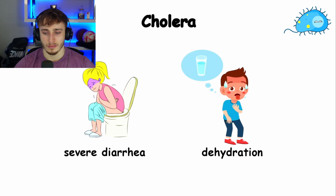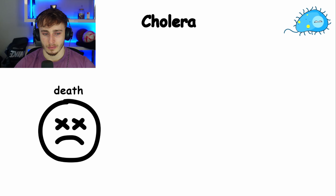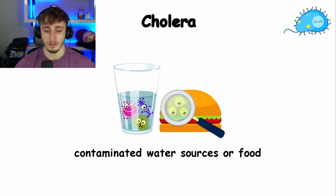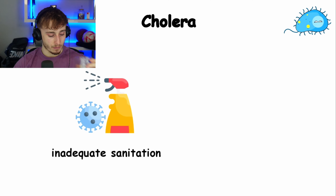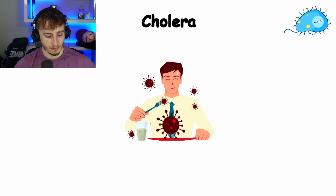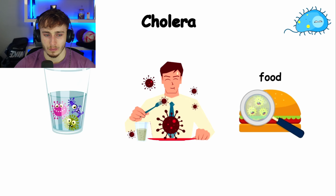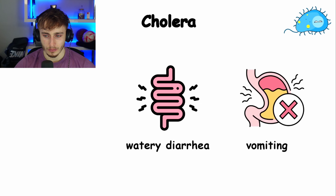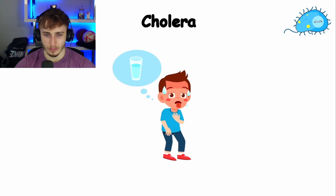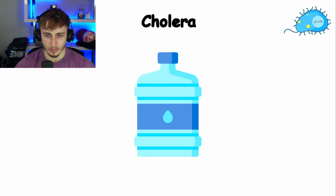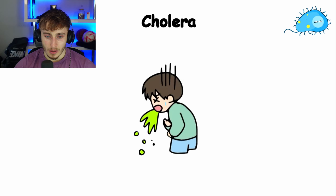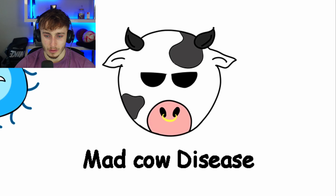Cholera. Cholera is a bacterial infection known for its rapid onset of severe diarrhea and dehydration, often leading to a life-threatening condition or death in less than 24 hours if not treated promptly. The bacteria are typically found in contaminated water sources or food, particularly in areas with inadequate sanitation and poor hygiene practices. When someone ingests contaminated water or food, the bacteria release a toxin in the intestines, which results in profuse watery diarrhea, vomiting, and leg cramps. It rapidly leads to severe dehydration, and even large volumes of water consumption may not prevent the intense symptoms because the bacteria toxins make it so that you cannot physically hold anything in your stomach without severe vomiting.